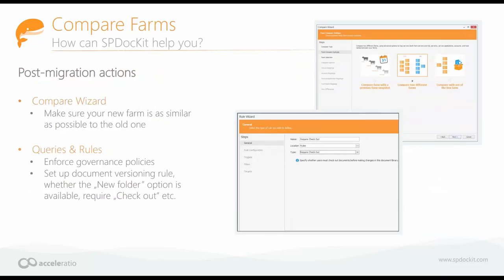Once you have a new farm — say you're moving from SharePoint 2013 to 2016, you've prepared two farms, and you want to ensure all settings are exactly the same as they were in SharePoint 2013 — you can use our Compare tool to compare two different farms and make sure everything is configured in exactly the same way. You can also use our queries and rules to enforce policies from your organization in the new SharePoint, ensuring everything is configured according to your governance policies.